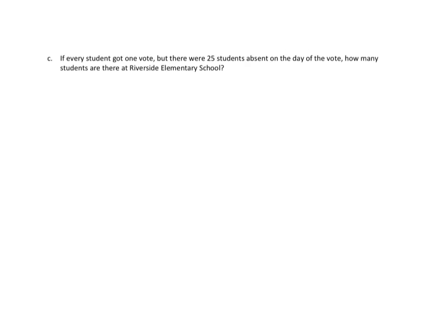Continuing with this problem two, we have part C. It says if every student got one vote, but there were 25 students absent on the day of the vote, how many students were at Riverside Elementary? Let's get back to another tape diagram. We are going to partition this into eight equal parts. We know that this many are blue. Now if we look back at part A, we needed to figure out what each one of these units are.